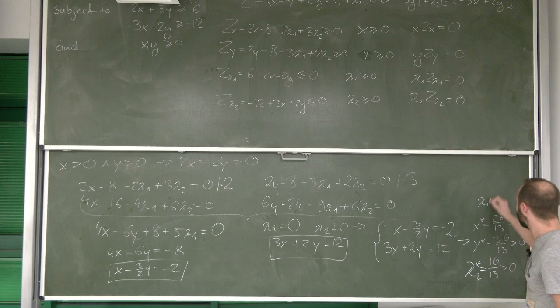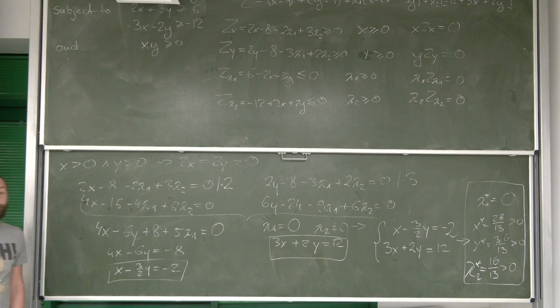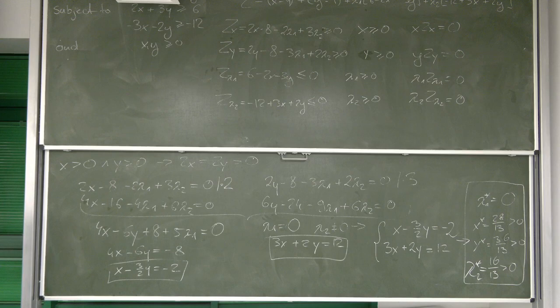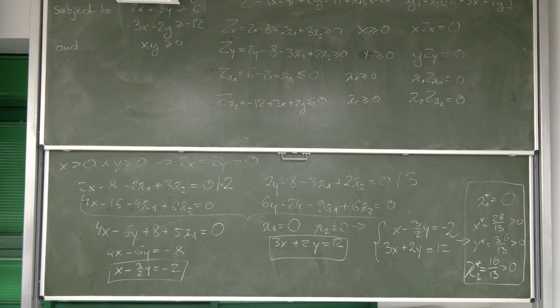Keeping in mind of course that lambda 1 is 0. And this is how we get the full solution. We see that in order to minimize this function under this restriction in the form of inequalities, we need to set x to be 28 over 13 and y to be 36 over 13.